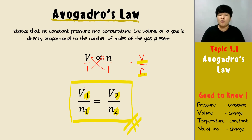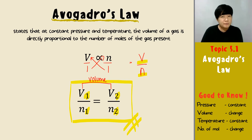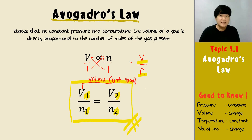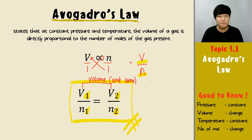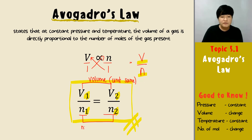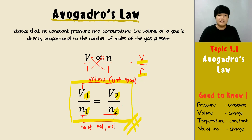For units: V1 and V2 are volumes, which can be in litres or millilitres, but the unit must be the same for both. The number of moles n1 and n2 have only one unit, which is moles. That is straightforward.